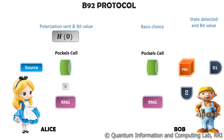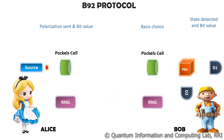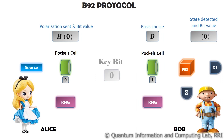When Alice sends horizontally polarized photons and Bob measures in the rectilinear basis, Bob detects the state correctly and no keybit is generated. Whereas, in the scenario where Alice sends horizontally polarized photons and Bob measures in the diagonal basis, Bob will detect the anti-diagonal polarization state with probability half and a keybit 0 will be generated.